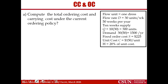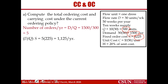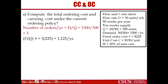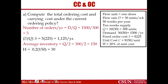Compute the total ordering costs and carrying costs under the current policy. Demand is 1,500 and each time we ordered 300 units, therefore we ordered five times. Cost of each order is $225, so total ordering cost is $1,125. Now we need to compute carrying cost. Average inventory is 300 divided by 2, and carrying cost per unit of product is $30 per unit per year. That leads to a carrying cost of $4,500.